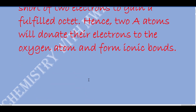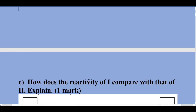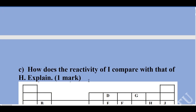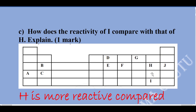How does the reactivity of I compare with that of H? I and H are in the same group. The reactivity in a group either increases or decreases down the group. In halogens, reactivity decreases down the group.